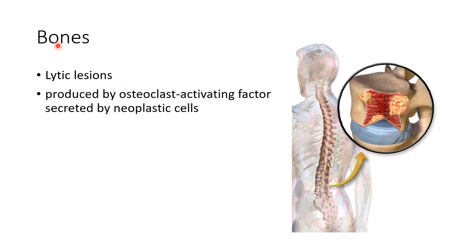Now let us see about the bones in multiple myeloma. There will be lytic lesions in bones. This is produced by osteoclast activating factor which is secreted by neoplastic cells in multiple myeloma. This picture shows the lytic lesions in multiple myeloma.